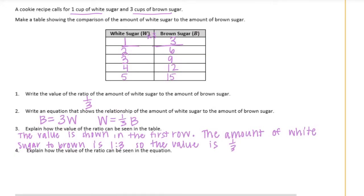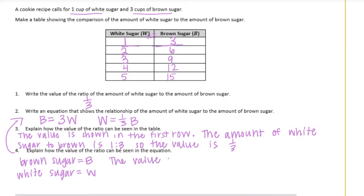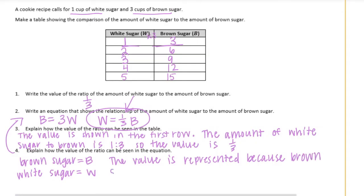Explain how the value of the ratio can be seen in the equation. Brown sugar is represented by b, and white sugar is represented by w. We can see that the value is represented where we have the one-third, because brown sugar is one-third times the amount of white sugar.